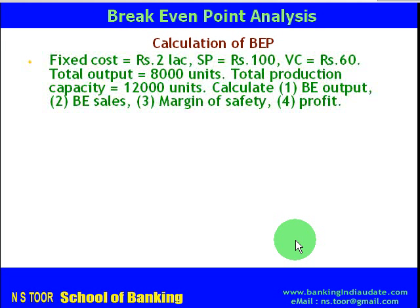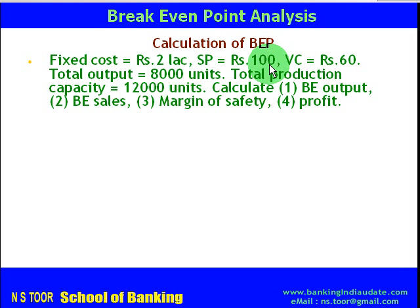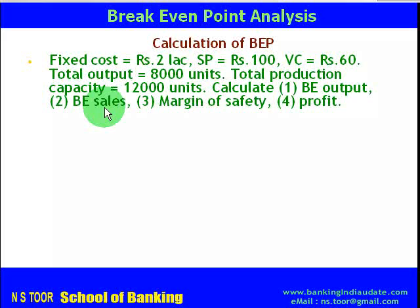Now in another example we shall calculate not only breakeven output but also breakeven sales, margin of safety, and profit. We are given: fixed cost Rs 2 lakh, selling price Rs 100, variable cost Rs 60, total output 8000 units, and total production capacity 12000 units. Calculate breakeven output, breakeven sales, margin of safety, and profit.